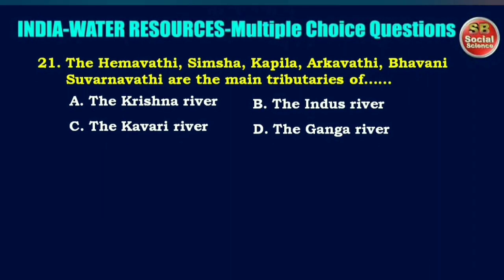Next question: Hemavati, Shimsha, Kapila, Arkavati, Bhavani, and Suvarnavati are the main tributaries of — options are the Krishna river, the Indus river, the Kaveri river, or the Ganga river. The right answer is option C: the Kaveri river.